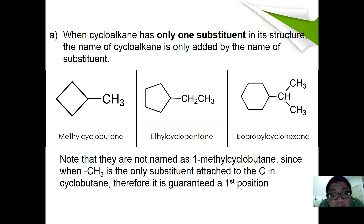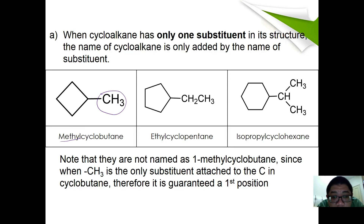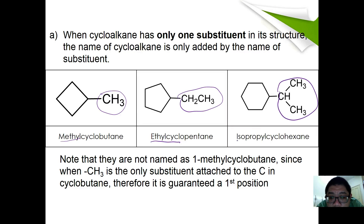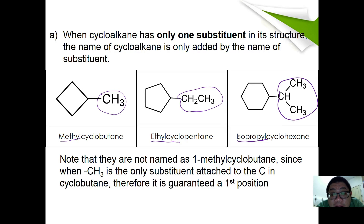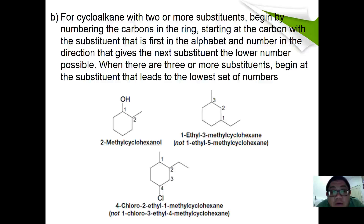When a cycloalkane has only one substituent, the name of the substituent is simply added as a prefix — for example: methylcyclopropane, ethylcyclopropane, or isopropylcyclopropane. They are not named as 1-methyl or 1-ethyl because when there is only one substituent in the ring, it is automatically carbon number one.